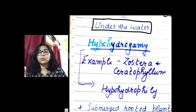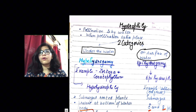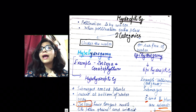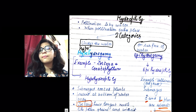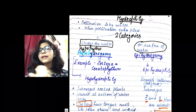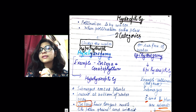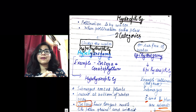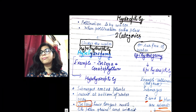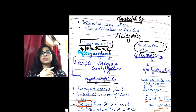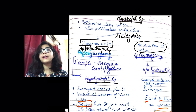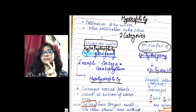If pollination occurs under the water it is known as hypo hydrogamy, also given the name hypo hydrophily. Pollination that happens on the surface of the water is known as epi hydrophily. So we have two terms: hypo hydrophily (or hypo hydrogamy) and epi hydrophily.